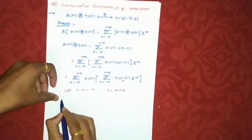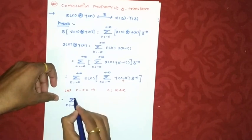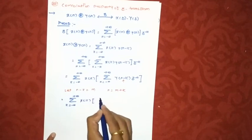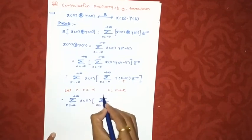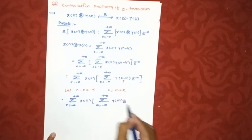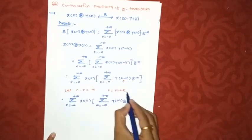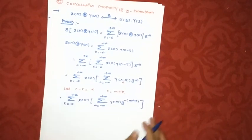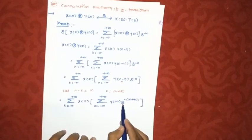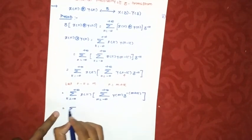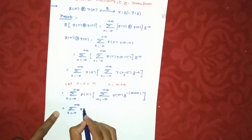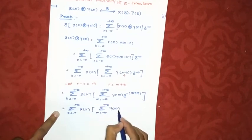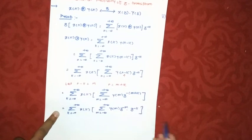So based on that, our equation becomes summation k minus infinity to plus infinity, this is x of k, into summation with respect to m, y of m into z raised to. Instead of n now we can write m plus k with a minus sign as minus m plus k. Now next step we will split this term of z with m and k. This is x of k, this summation with respect to m, y of m into z raised to minus m into z raised to minus k.